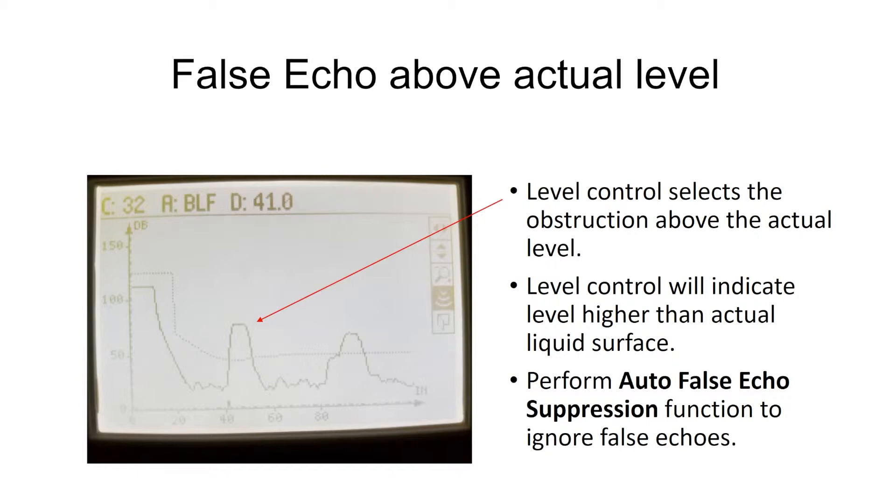We have a couple of options. Number one is, if we have the sensor right above a very reflective device, whether it be a wall or a pipe, if we consider moving it to get rid of that obstruction, that's probably our first choice. If not, there's some tricks we can do. One of them is the auto false echo suppression. What that does is it basically maps out any type of false obstruction we have above the actual level. That works pretty well, but does not work all the time.